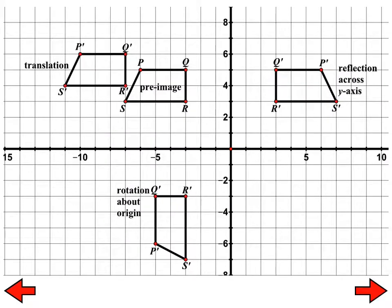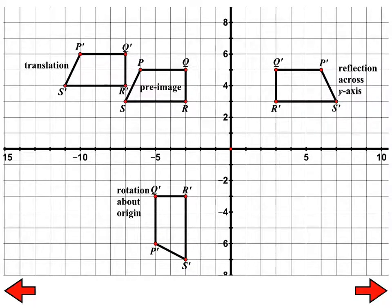This picture shows lots of different things: our pre-image PQSR, a translation from that, a rotation about the origin with respect to the pre-image, and a reflection. I'm going to leave this picture up so you can fill in the table in your notes. You're given some sort of property or description, and you have to figure out which transformation or transformations apply — some have more than one. Compare with your shoulder partner when finished, then we'll go through it. Take about a minute and a half to two minutes, and if you get stuck, look at the picture.